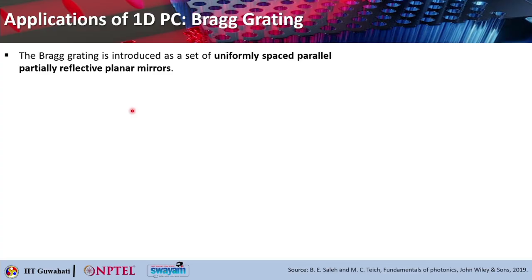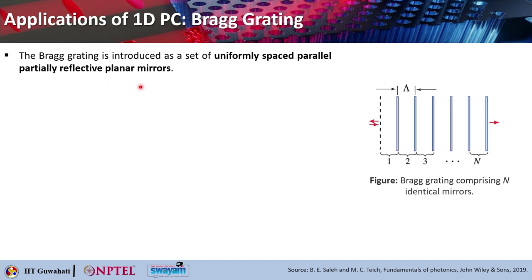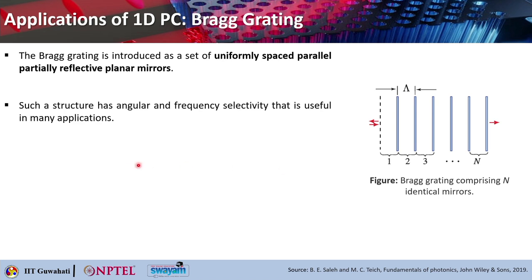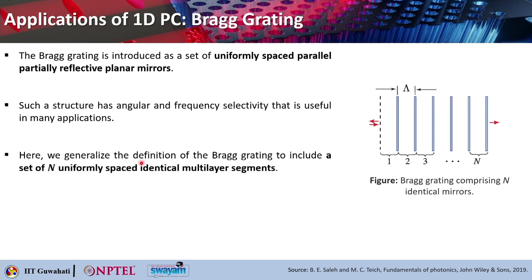Let us focus on the first application: Bragg grating. Bragg grating is introduced as a set of uniformly spaced parallel partially reflective planar mirrors. These are basically partially reflective mirrors which are uniformly spaced and parallel to each other, and there can be n number of identical mirrors. Such a structure has angular and frequency selectivity, which is useful for many applications. We will generalize the definition of Bragg grating to include a set of n uniformly spaced identical multilayer segments.